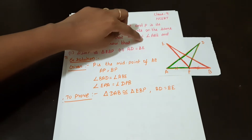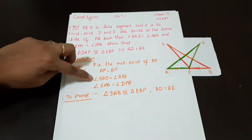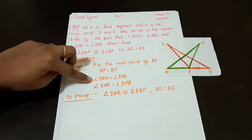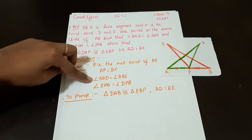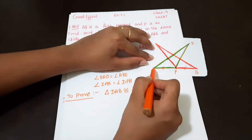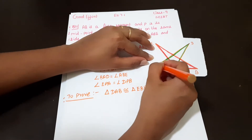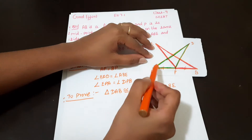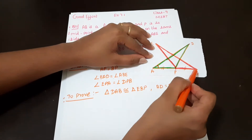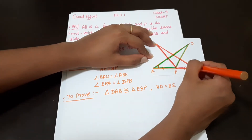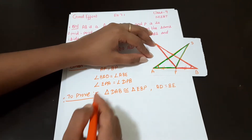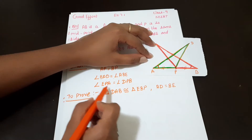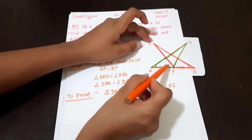Next, angle BAD is equal to angle ABE — this is given. And angle EPA is equal to angle DPB — this is also given.